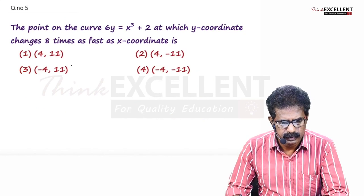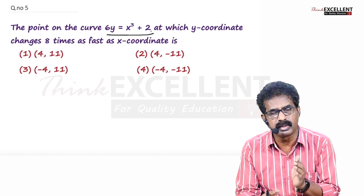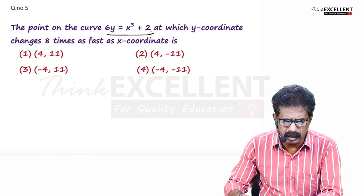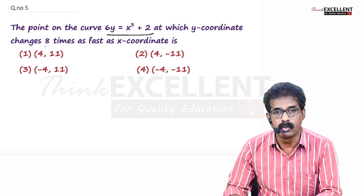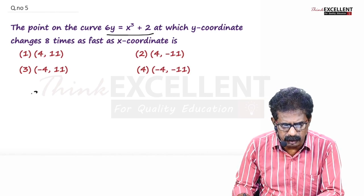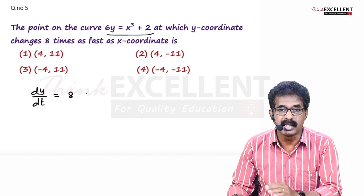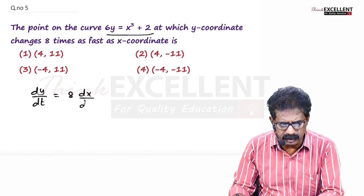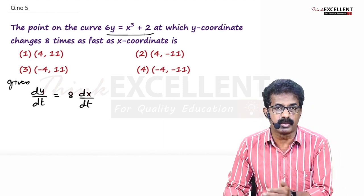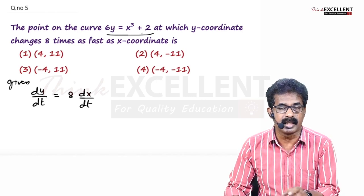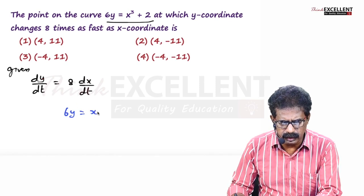Question number 5. Find the point on the curve at which the y-coordinate changes 8 times as fast as the x-coordinate. That means dy/dt = 8 · dx/dt. The given equation is 6y = x³ + 2.